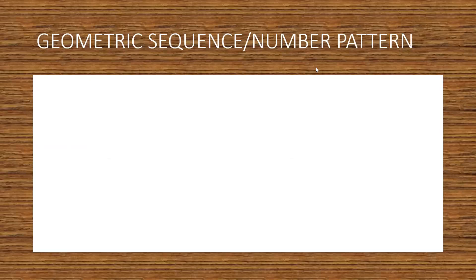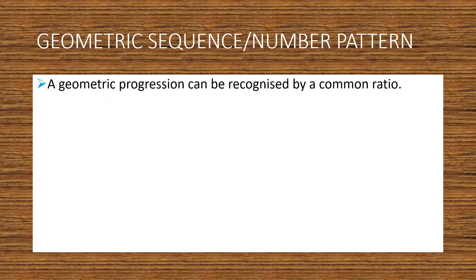Yes, what do you think it is? What geometric sequence? I'm not sure. A geometric sequence or a geometric progression can be identified by a common ratio. Remember, an arithmetic sequence can be identified by a common difference. When it comes to geometric sequence, it can be only identified by a common ratio.